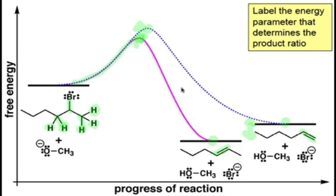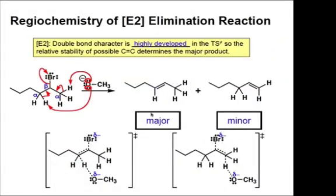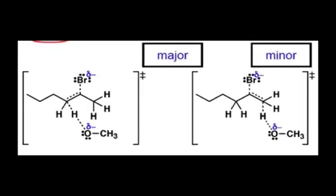On the next slide, what's shown for you here is the transition states for each of these processes. You'll notice here that a substantial amount of double bond character is developed in the transition state, and this is a great advantage for chemists because we can use our stability trends for alkenes to decide which product will be formed in greater amounts.